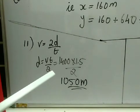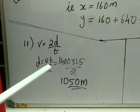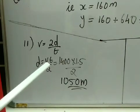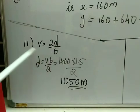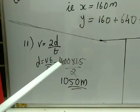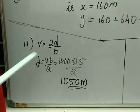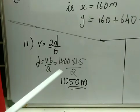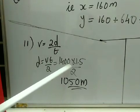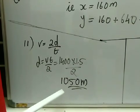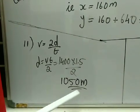Question number 11: an ultrasonic wave is sent from a ship towards the bottom of the sea, and the wave returns after 1.5 seconds. Speed of sound in sea water is 1400 m/s. Using D = V×T/2 = 1400 × 1.5 / 2 = 1050 meter. So the depth of the sea is 1050 m.